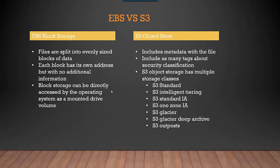Elastic Block Store files are split into evenly sized blocks of data. Each block has its own address but no additional information. Block storage can be directly accessed by the operating system as a mounted drive volume, so the performance is really fast.